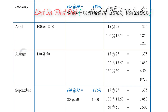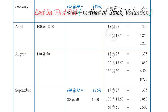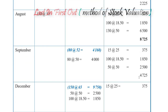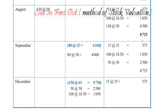In August, we bought more items — 130 units at $50. So our balance would consist of 15 at $25, which is also here, and the 100 at $18.50, which we can see here. We'd carry down those two balances, and underneath that we'd represent the newest acquisition of 130 at $50. That gives us a total of $8,725. Things are about to get pretty interesting.